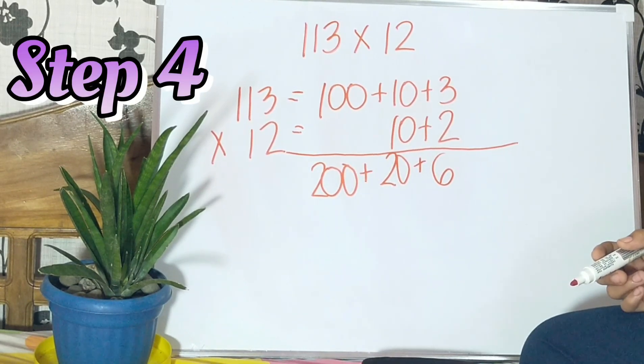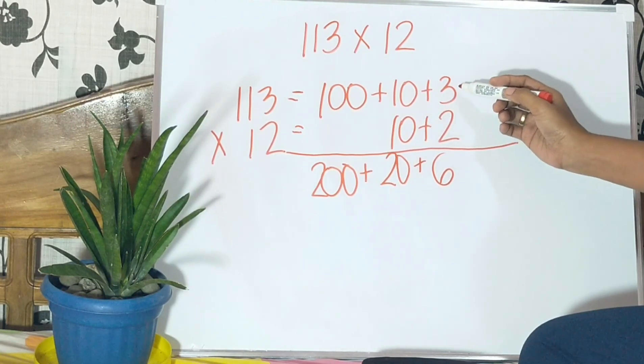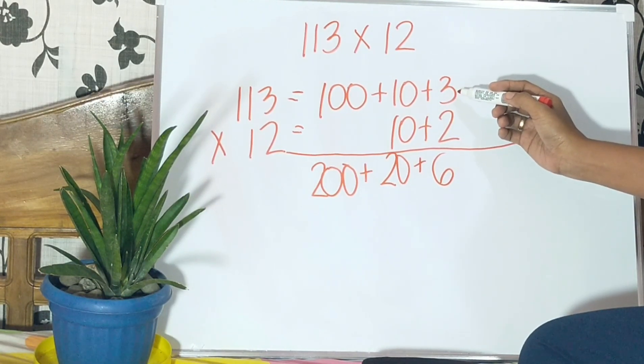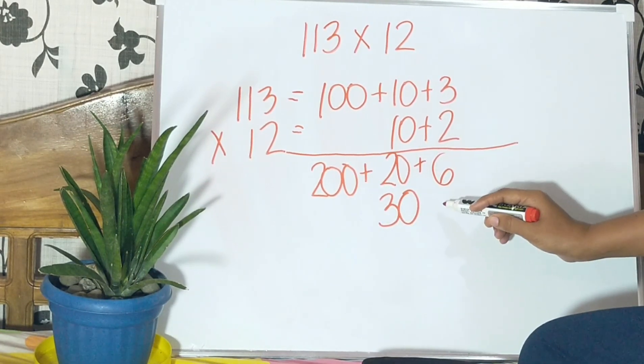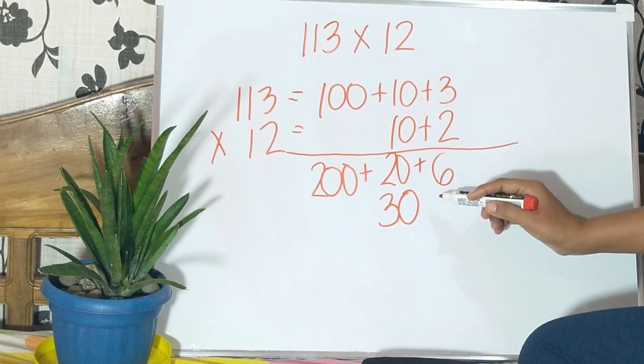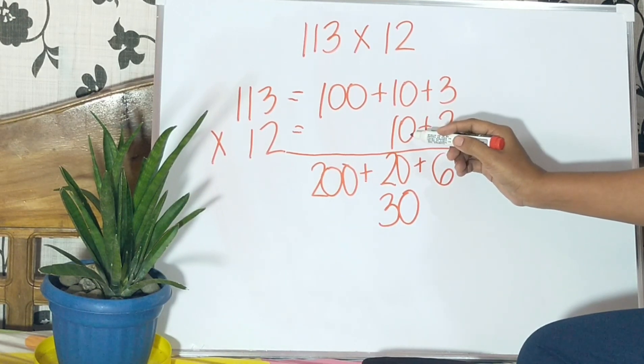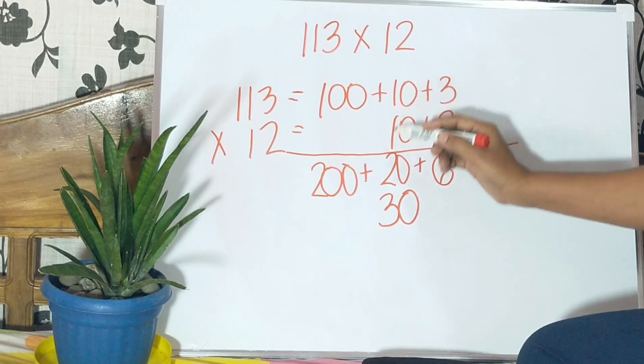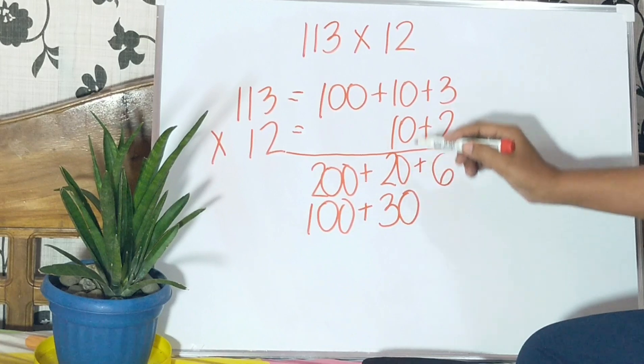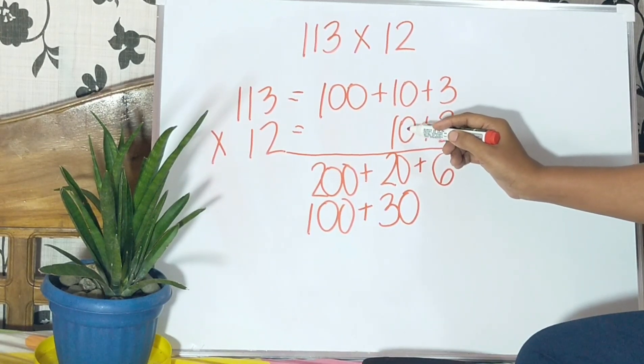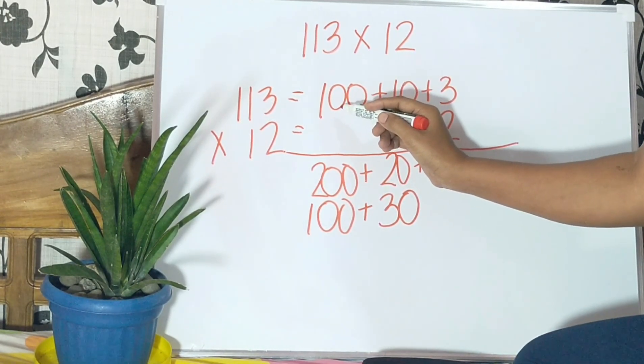Step 4: Multiply the tens digit of the multiplier by the multiplicand. So, we have 10 multiplied by 3 is 30. Let us leave the ones place blank. Then, 10 multiplied by 10 is 100, and 10 multiplied by 100 is 1,000.